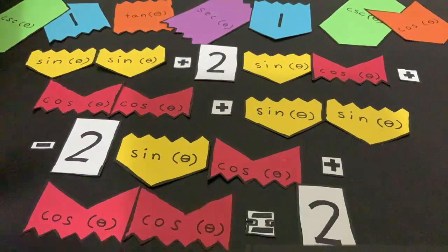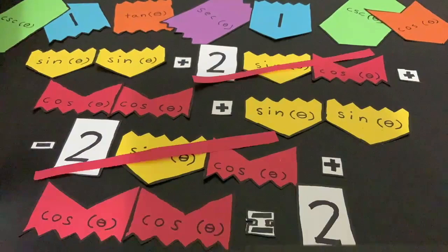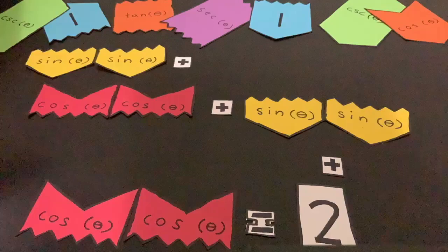Now if you look closely at this equation, you can see that there are some things that we need to cross out, such as 2 sine theta times cos theta minus 2 sine theta times cos theta is equal to 0. So we can just eliminate that from the equation.